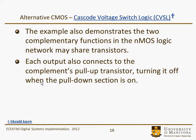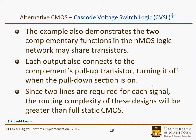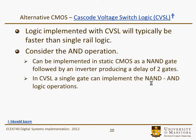Each output also connects to the complement's pull-up transistor, turning it off when the other pull-down section is on. Since two lines are required for each signal, the routing complexity of these designs will be greater than that of full static CMOS. Logic implemented in CVSL will typically be a little faster than single-rail logic. For example, an AND gate could be implemented in static CMOS as a NAND followed by an inverter, producing a delay of two gates. But in CVSL, it's a single gate that implements both AND and NAND simultaneously.